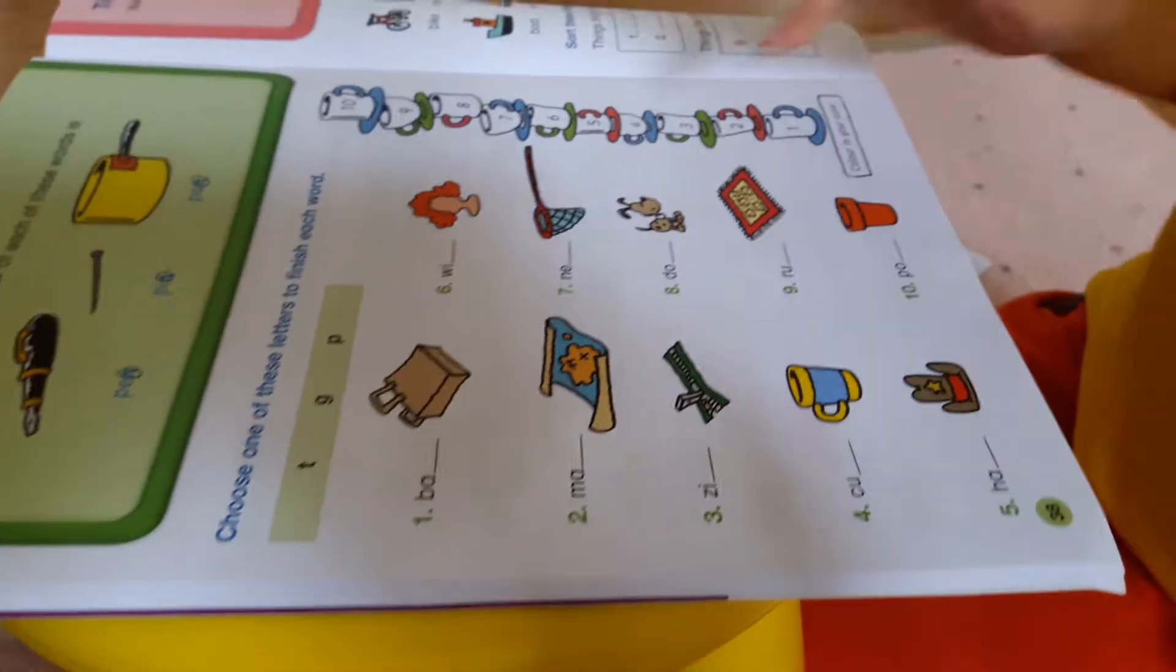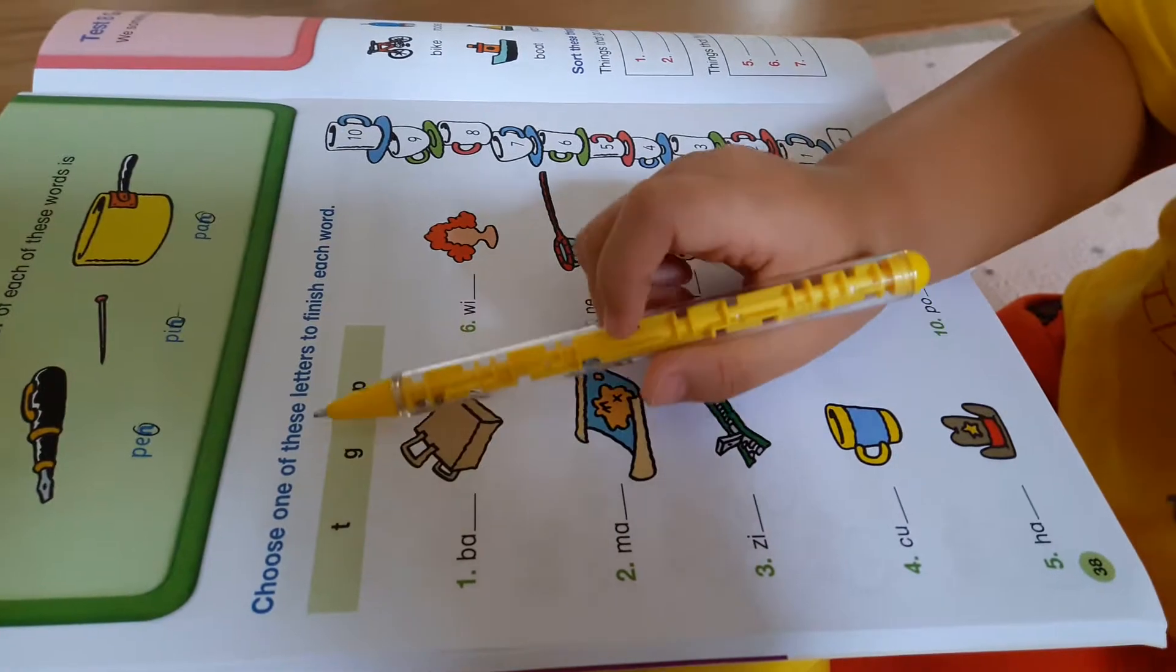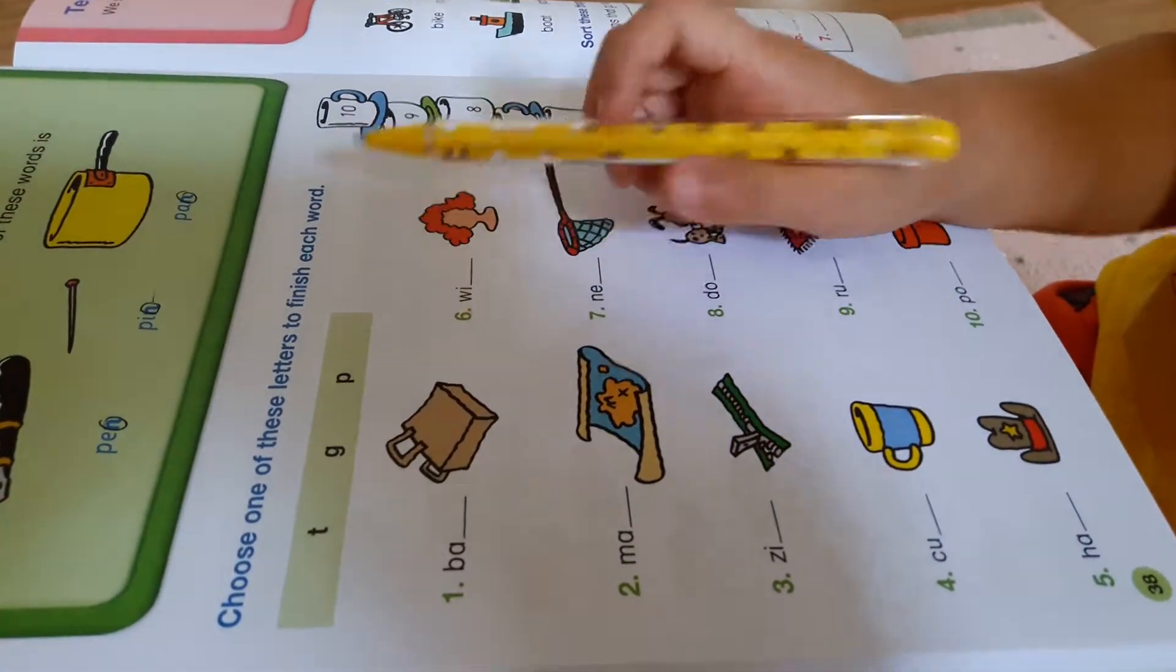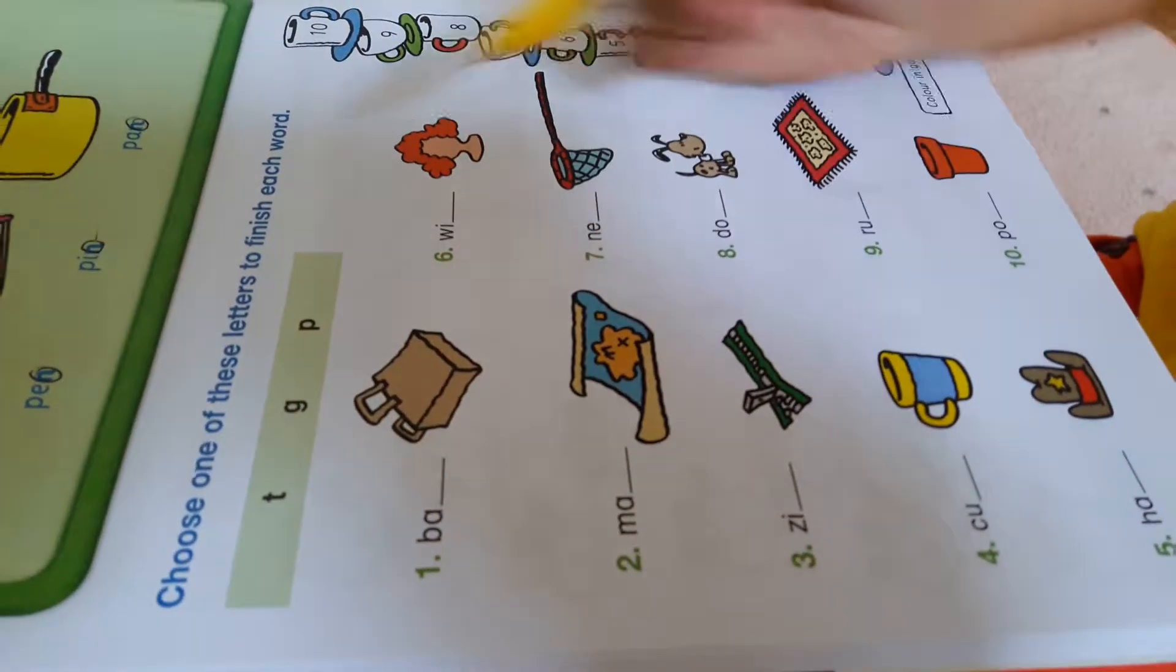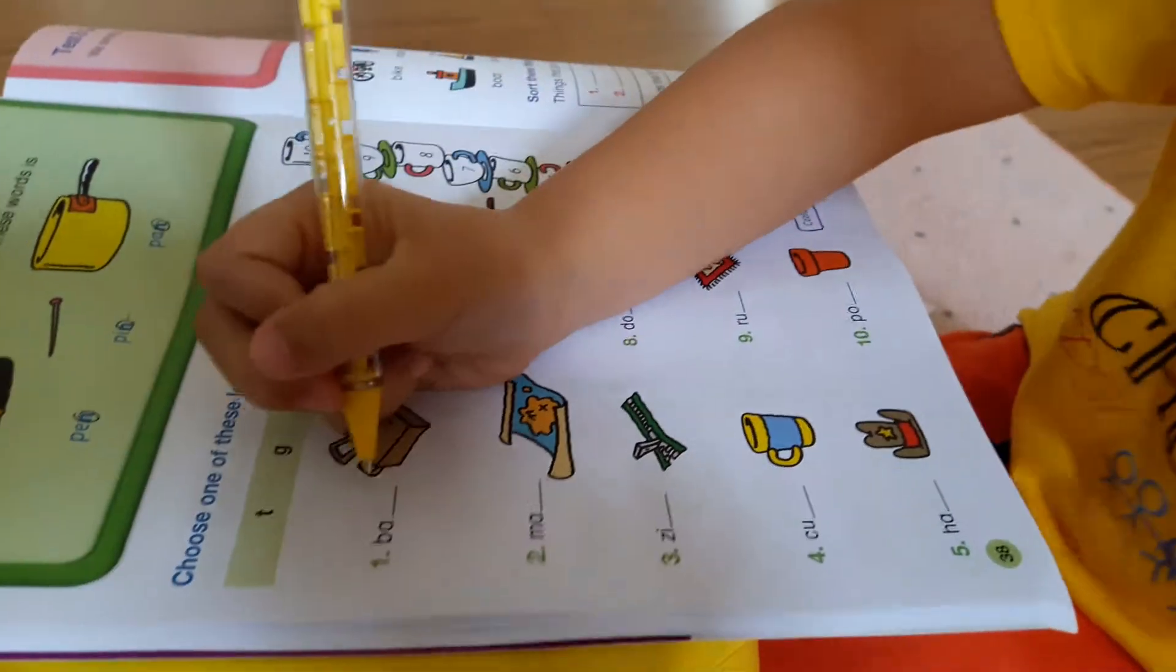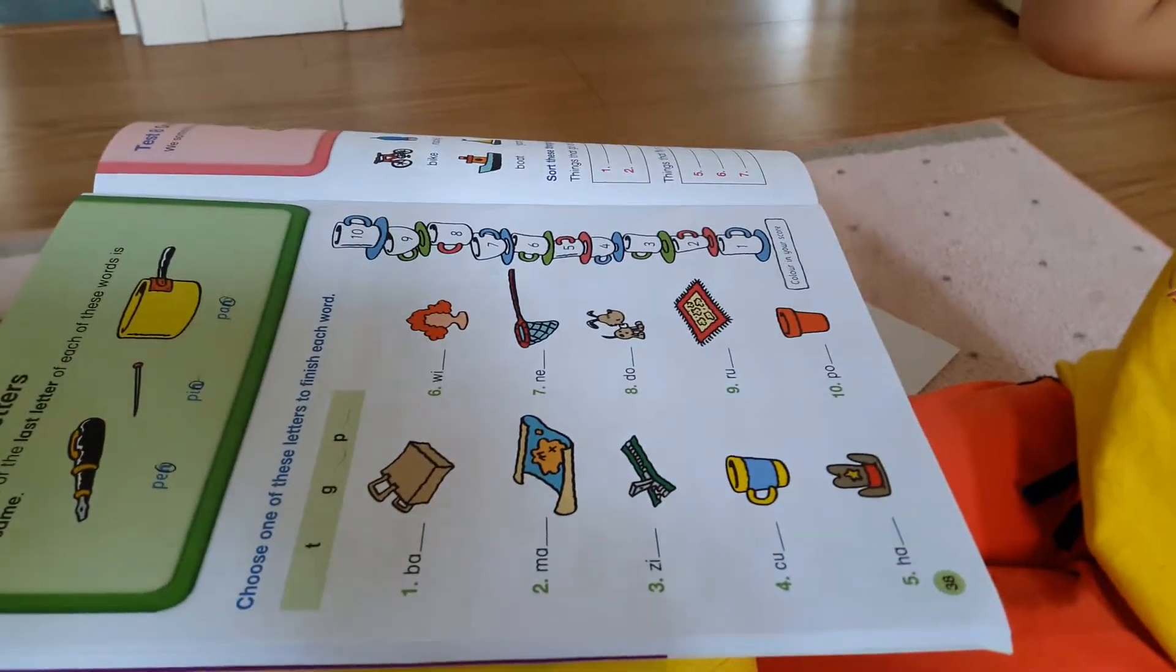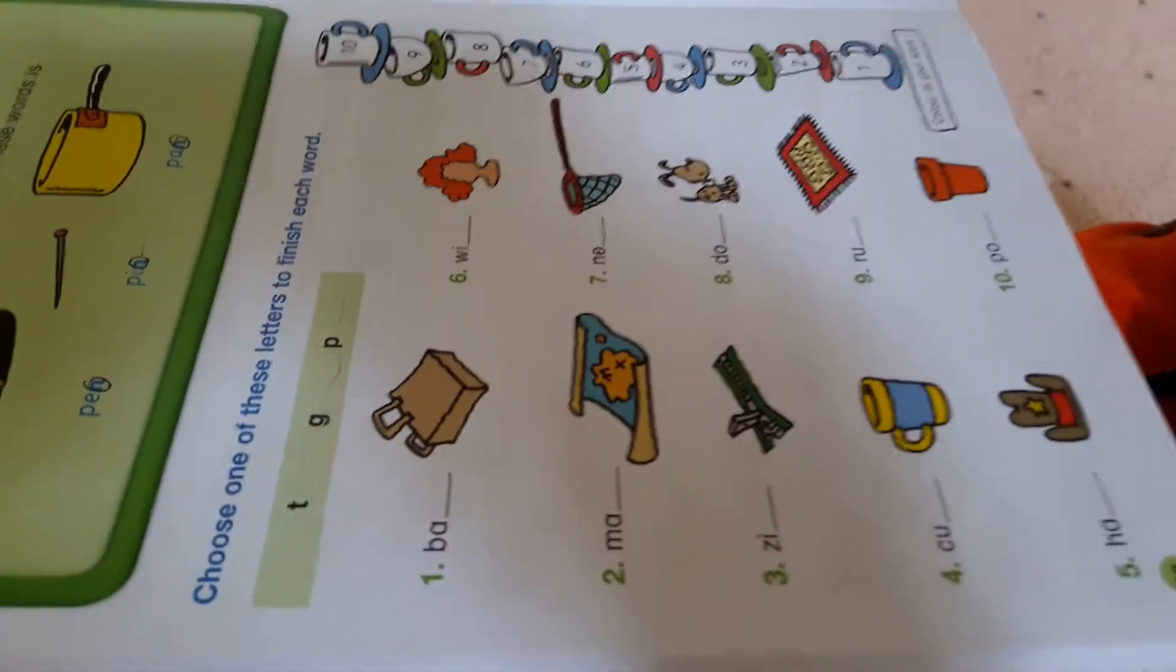So let's go on to the next one. Choose one of these letters to finish each word: T, G, P. So we basically choose one of these to put in to fill in these. And that's how you do it. So let's go.